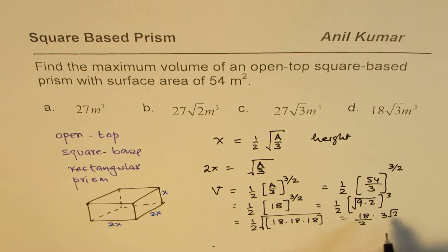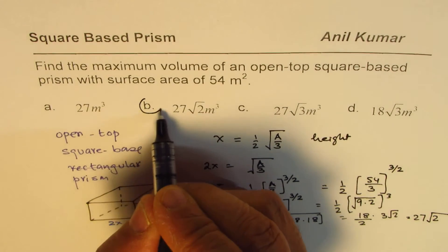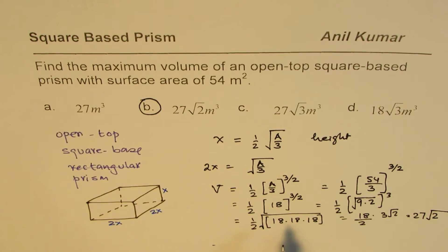So that is what you get as your solution. So 18 divided by 2 is 9, 9 times 3 is 27. So the answer is 27 square root 2. So that is option B for us.